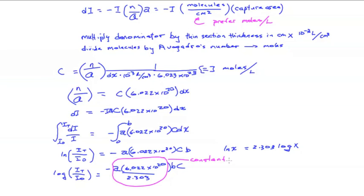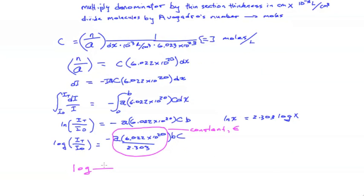There's a fixed property that we'll call epsilon, or the molar absorptivity. So we have the log of the intensity ratio is proportional to the concentration, and the proportionality constants are epsilon bc. And that is the absorbance that we noted before in Beer's law.